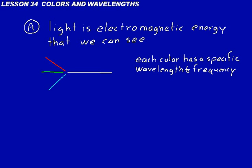Each color of light has a specific wavelength and frequency. The frequency is usually used to determine the amount of energy that a particular color of light possesses. Red is pretty much the lowest energy form of light, then there's green, then blue is higher energy.